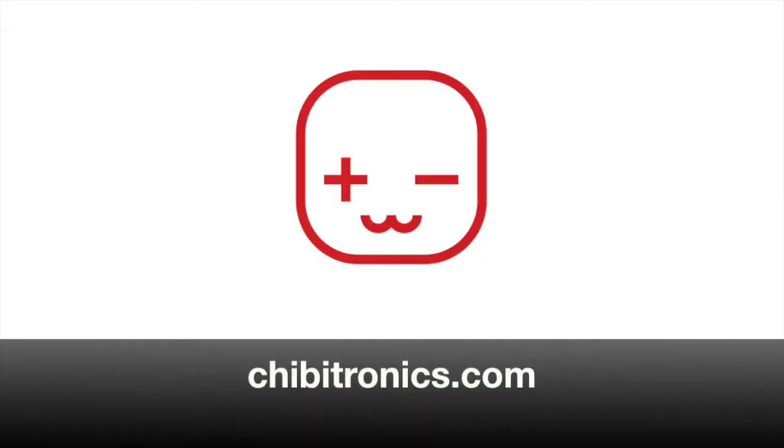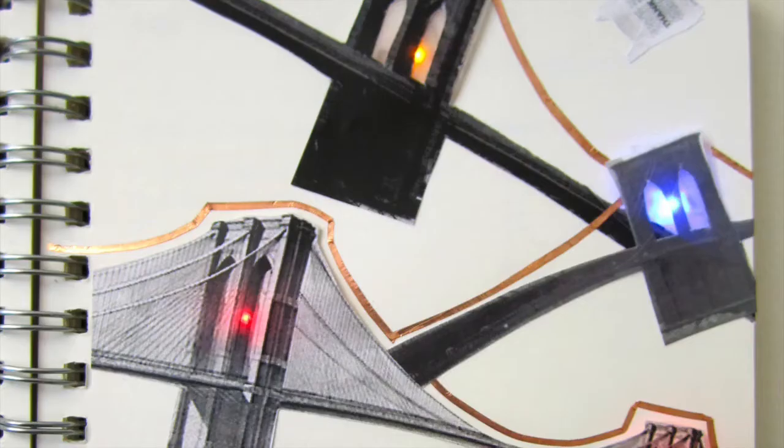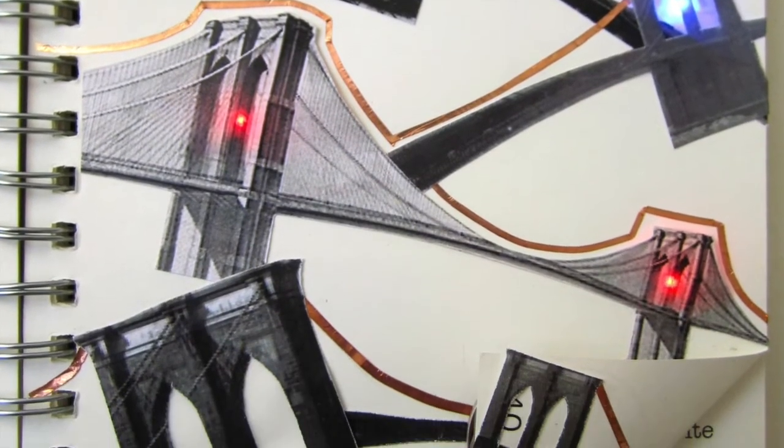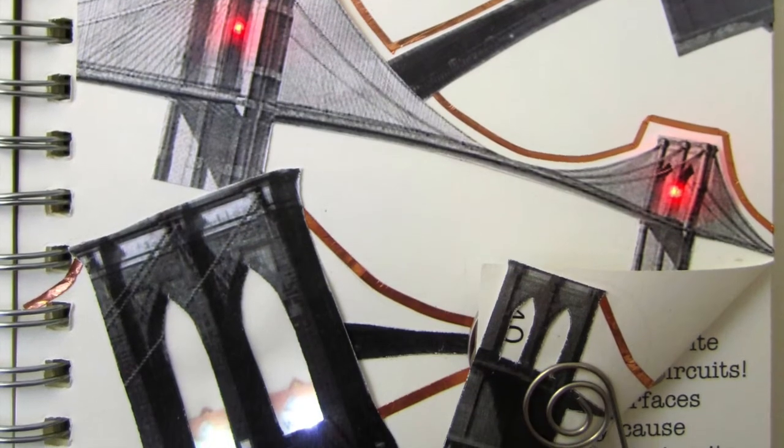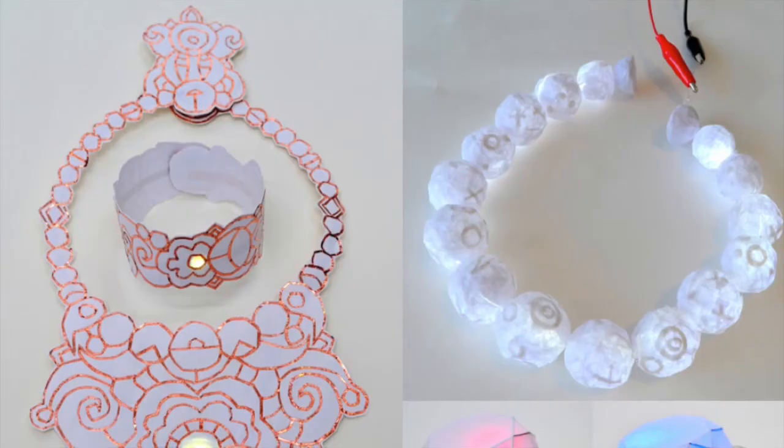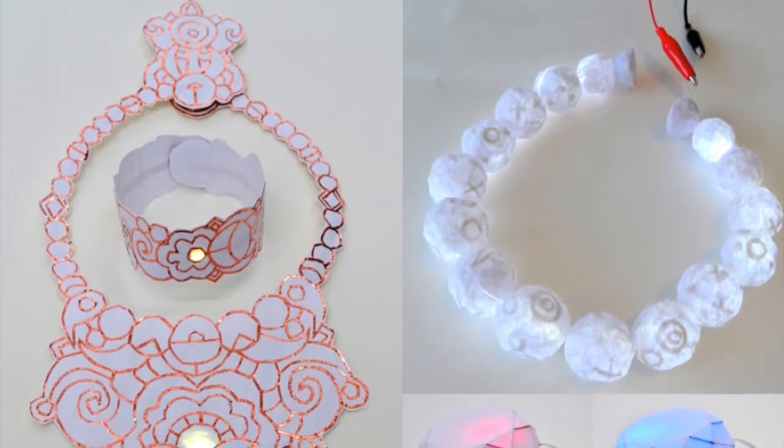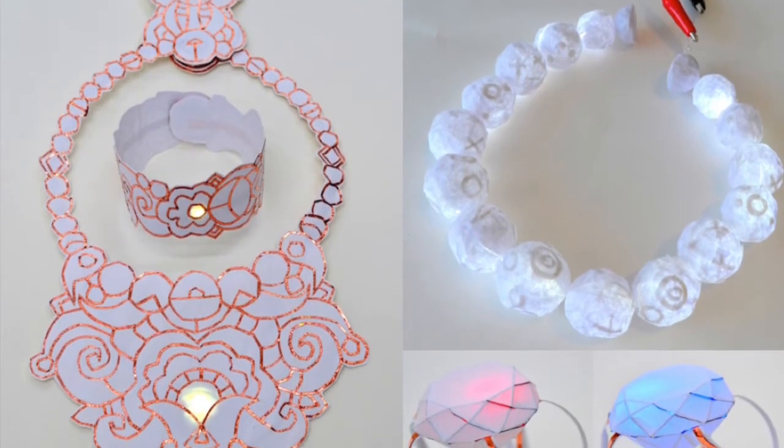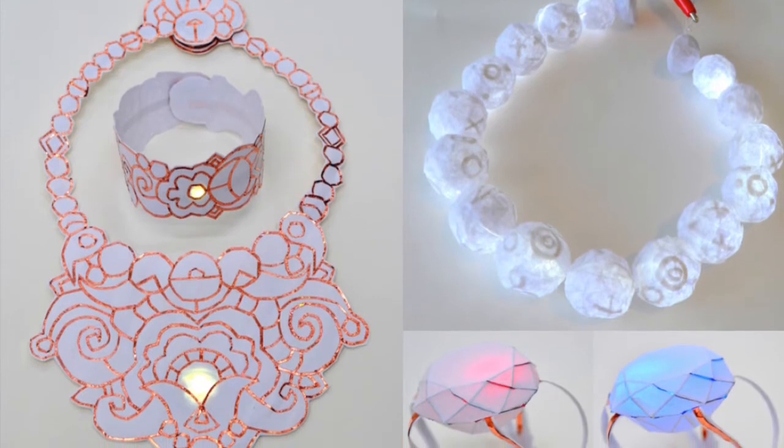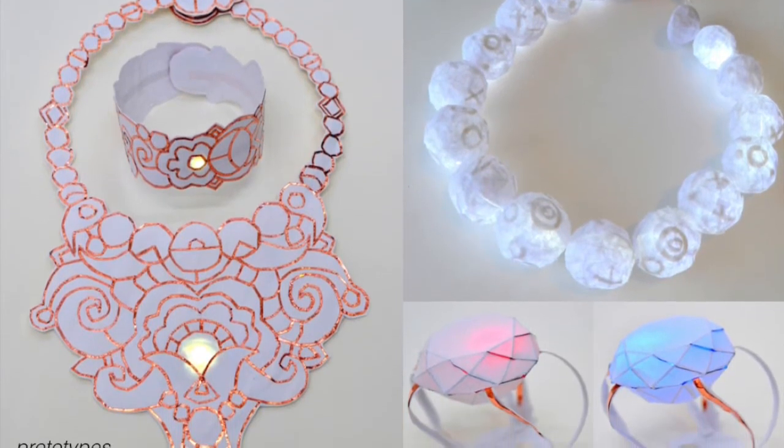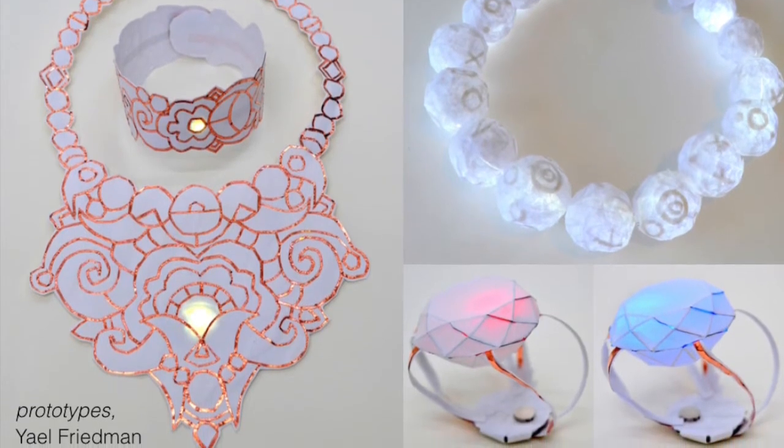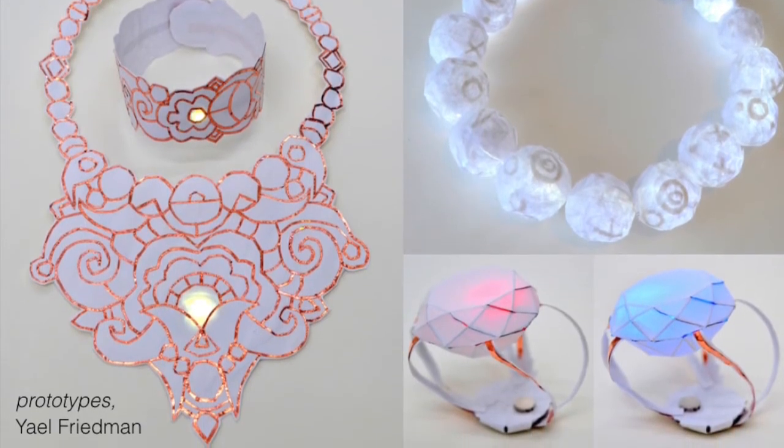To get the circuit stickers and other paper circuit supplies, you can go to chibitronics.com. Using only the circuits presented in this sketchbook, you can already do tons of really cool projects. Let's take a look at some examples. These are some jewelry prototypes by artist Yael Friedman. For example, she used the copper tape and used it as decoration in this bracelet and necklace set. She also played with using light to illuminate shadows and textures in the paper that you wouldn't see otherwise, as well as using different colored LEDs to change the mood of a particular piece.